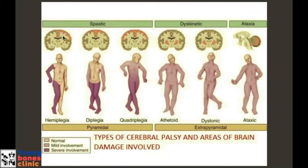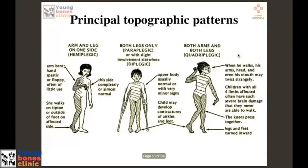In the spastic type, usually the cortical part is damaged. The dyskinetic type means mostly the basal ganglia and the putamen are damaged. In the ataxic type, mostly the cerebellum is damaged. We will be focusing mainly on the three commonest types: spastic hemiplegic, spastic diplegic, and spastic quadriplegic. Quadriplegic types are mostly non-ambulatory kids, and we'll be speaking more about them.